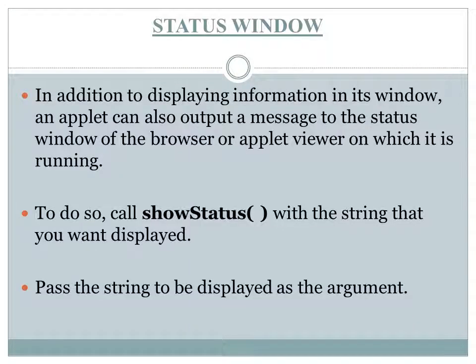The next topic is the status window. The status window is used to display information at the bottom of the applet viewer or browser. To display a message in the status window, we use the method showStatus, with the message to be displayed as the argument.